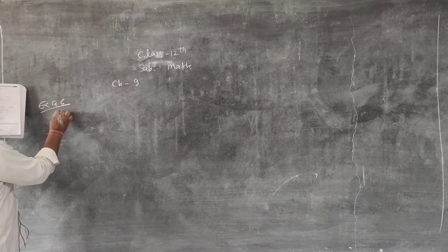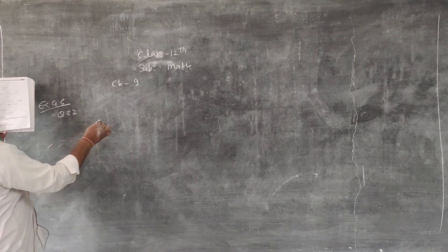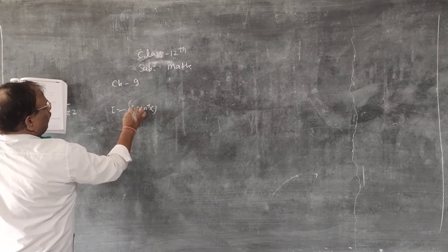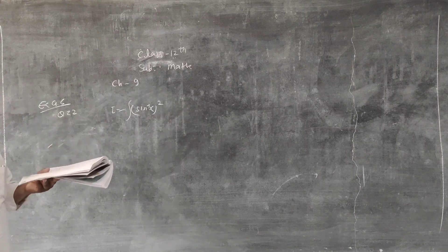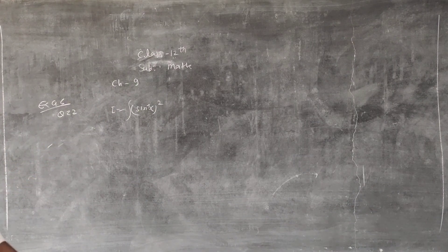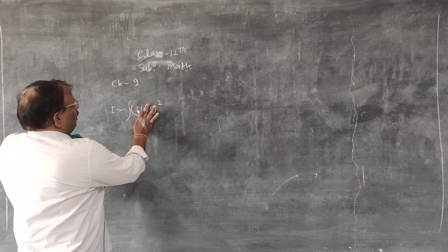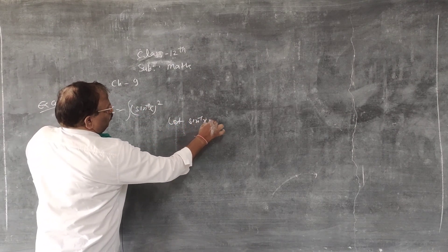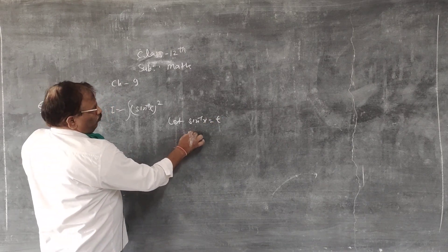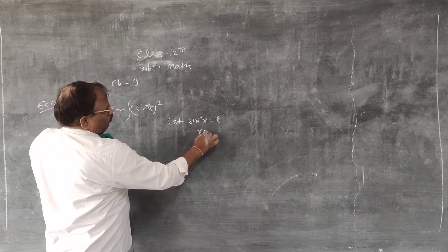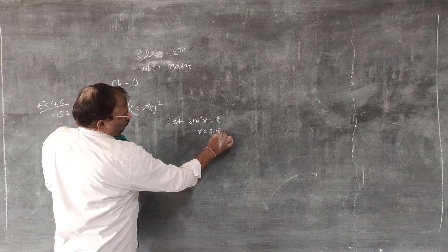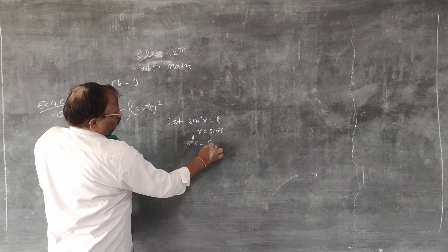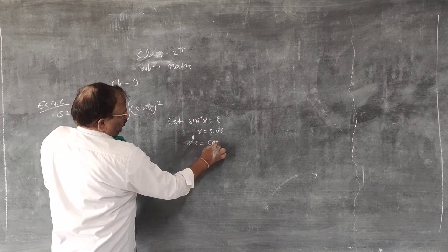Question number 22 from exercise 9.6: integration of (sin⁻¹x)². To solve this, let sin⁻¹x = t. Therefore x = sin t. Differentiating with respect to t, dx = cos t dt.